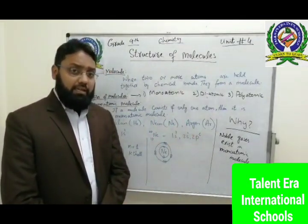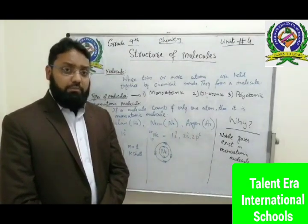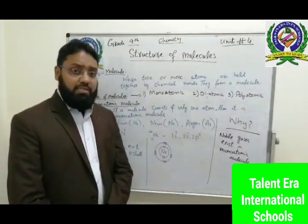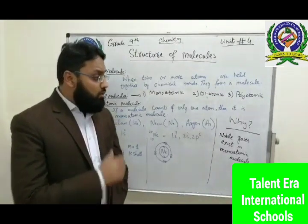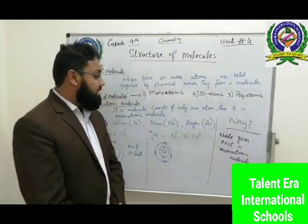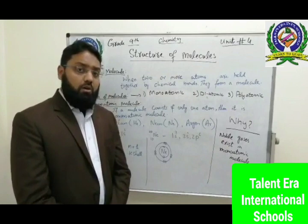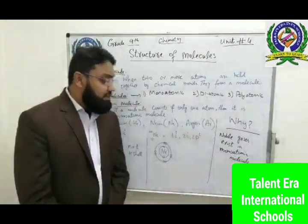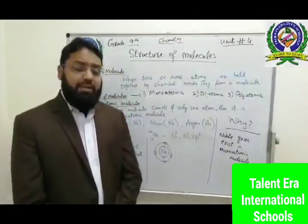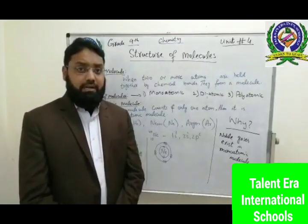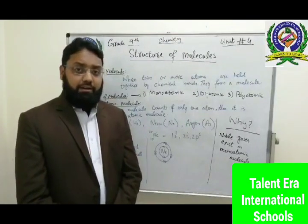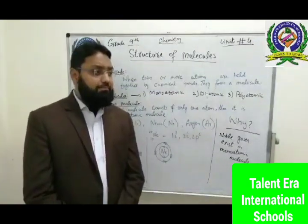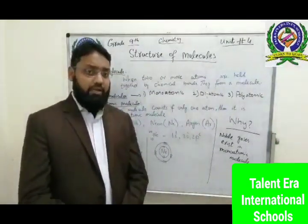Group 8A consists of the noble gases. Why are these elements called noble gases or inert gases? Because these elements cannot react with other elements. That is why they are called inert, or in other words, they are unable to react with other elements.